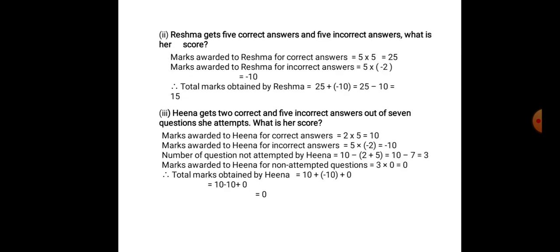Reshma gets 5 correct answers and 5 incorrect answers. What is her score? For every correct answer, marks awarded are 5. She has written 5 correct answers. So 5 into 5 is 25, her score for correct answers. She has written 5 incorrect answers. For every incorrect answer, minus 2 is the score. So for 5 incorrect answers, 5 into minus 2 gives minus 10. The total score obtained by Reshma is equal to 25 plus minus 10. 25 minus 10 is equal to 15, her final score.